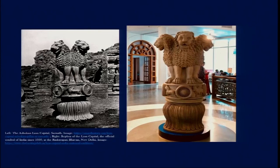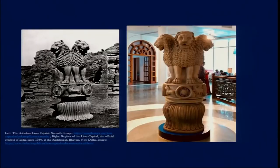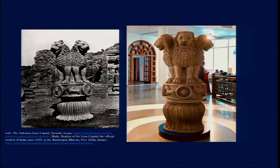This particular lion capital has great importance because it speaks about the four directions and the spread of dhamma or the righteous path. The message embedded in it is that all four directions of a kingdom — all sides of a country — need to have the rule of righteousness for a stable way of living. That is why this particular motif and sculpture from Sarnath was elected as the new symbol of the Republic of India in the year 1950.